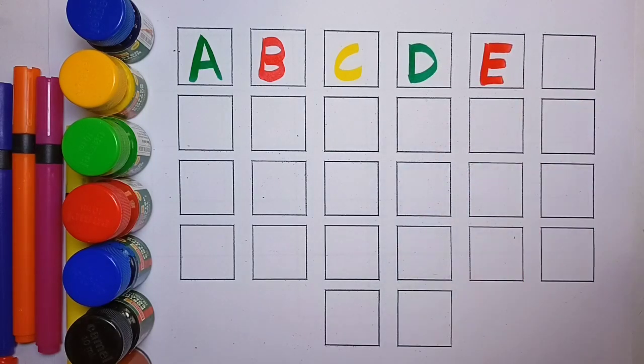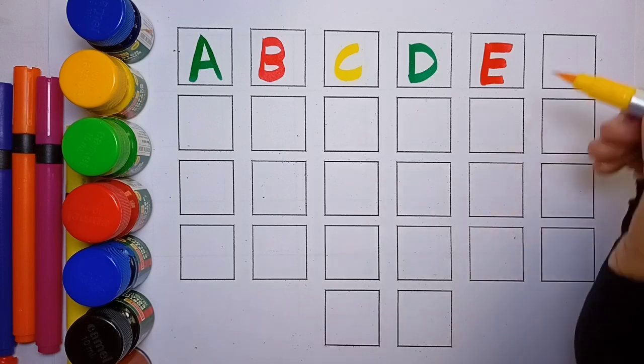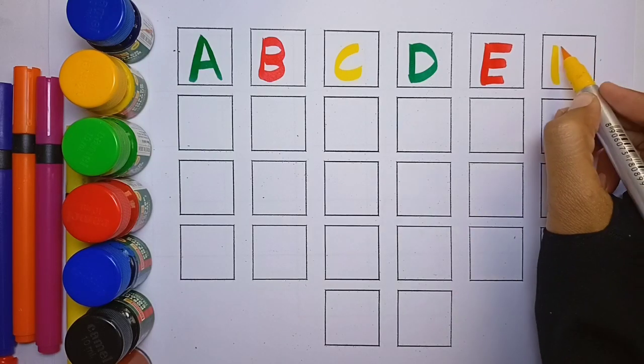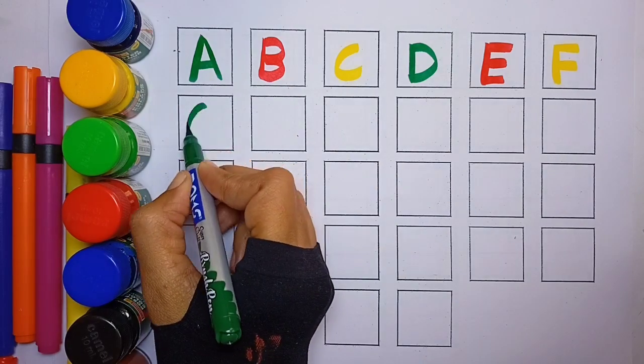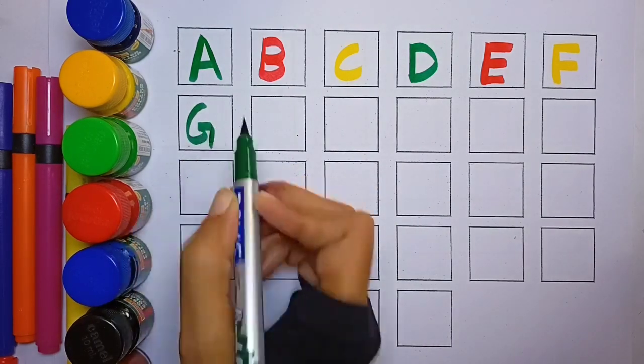F, F for Fish, yellow color. G, G for Giraffe, green color.